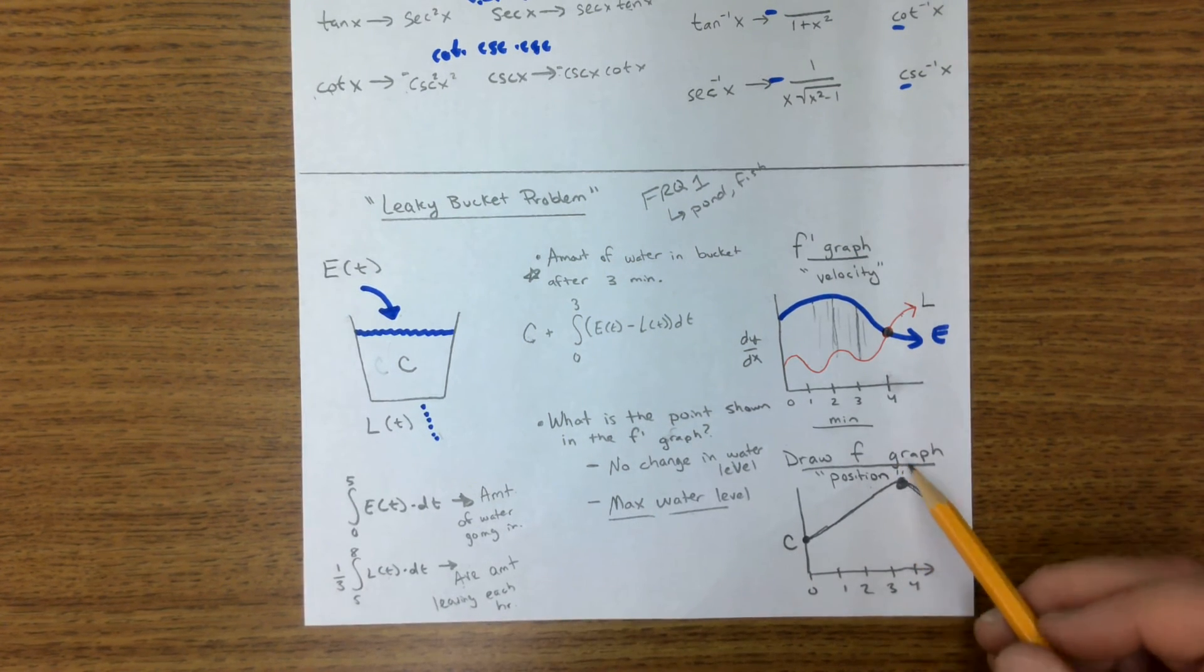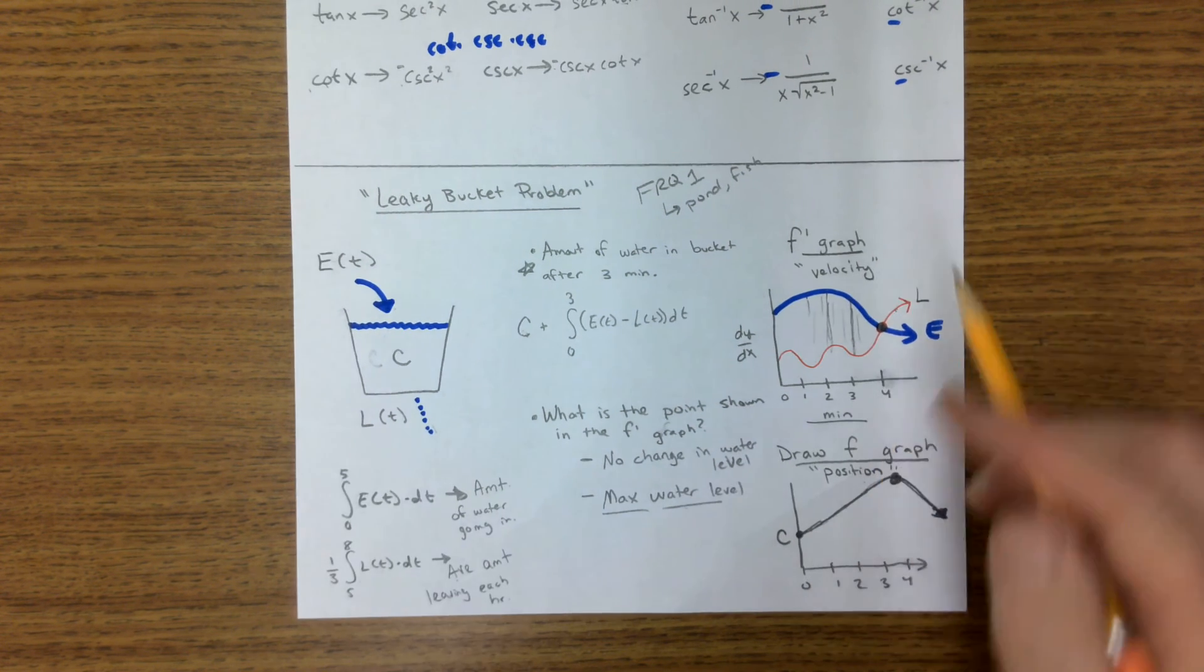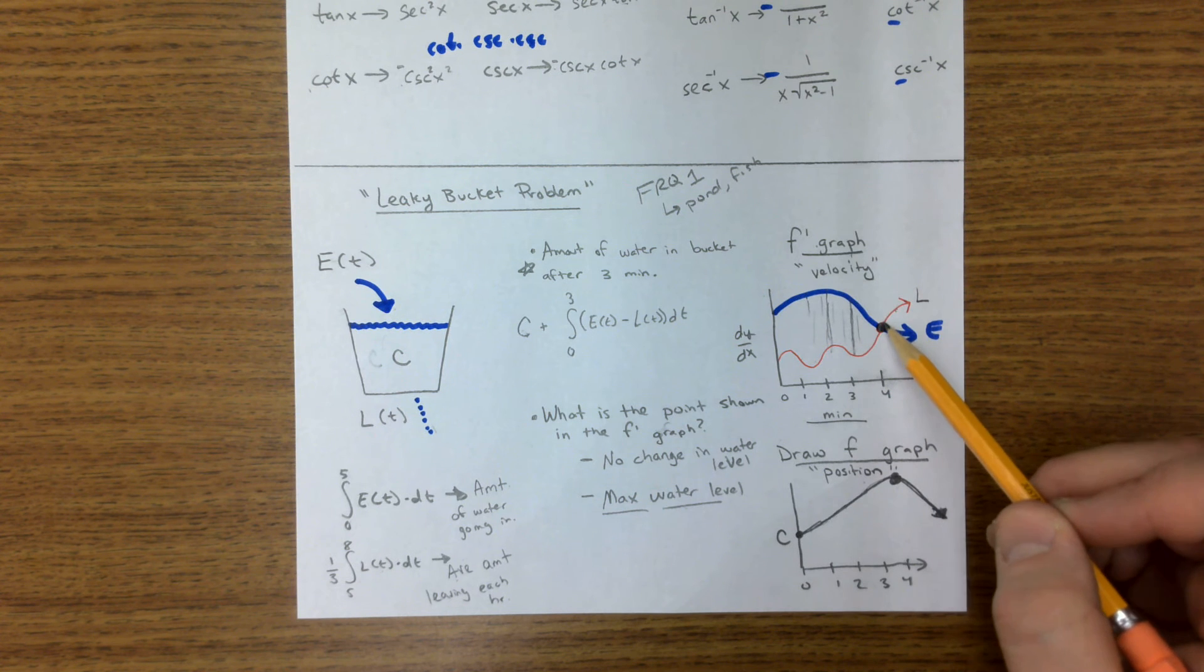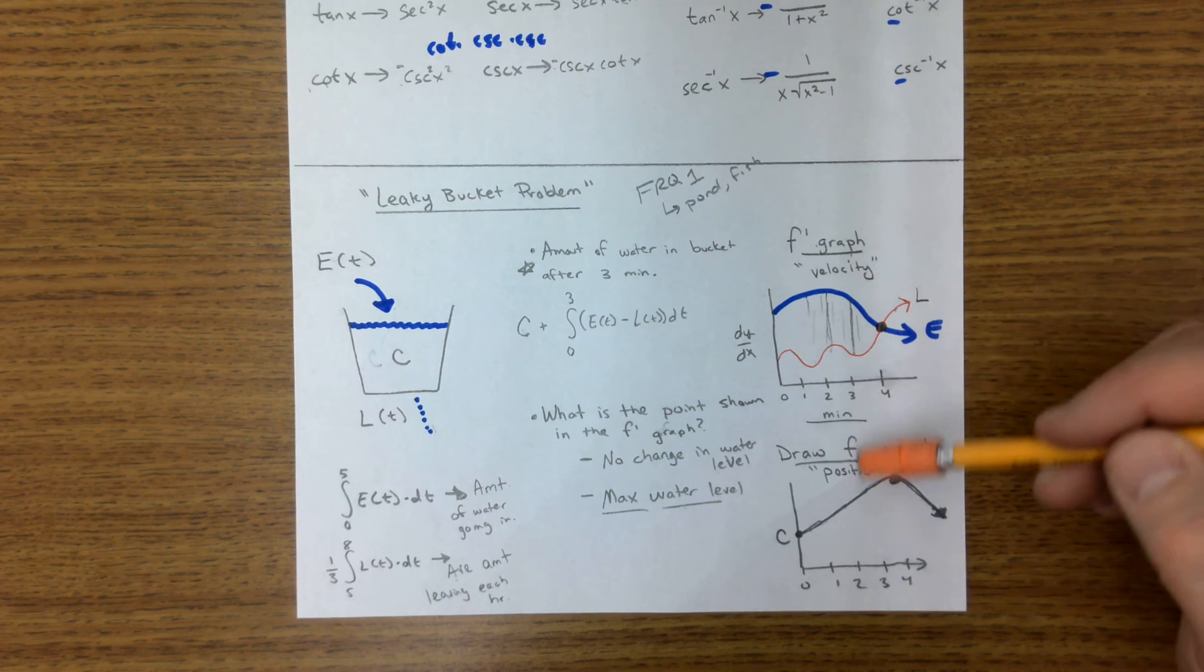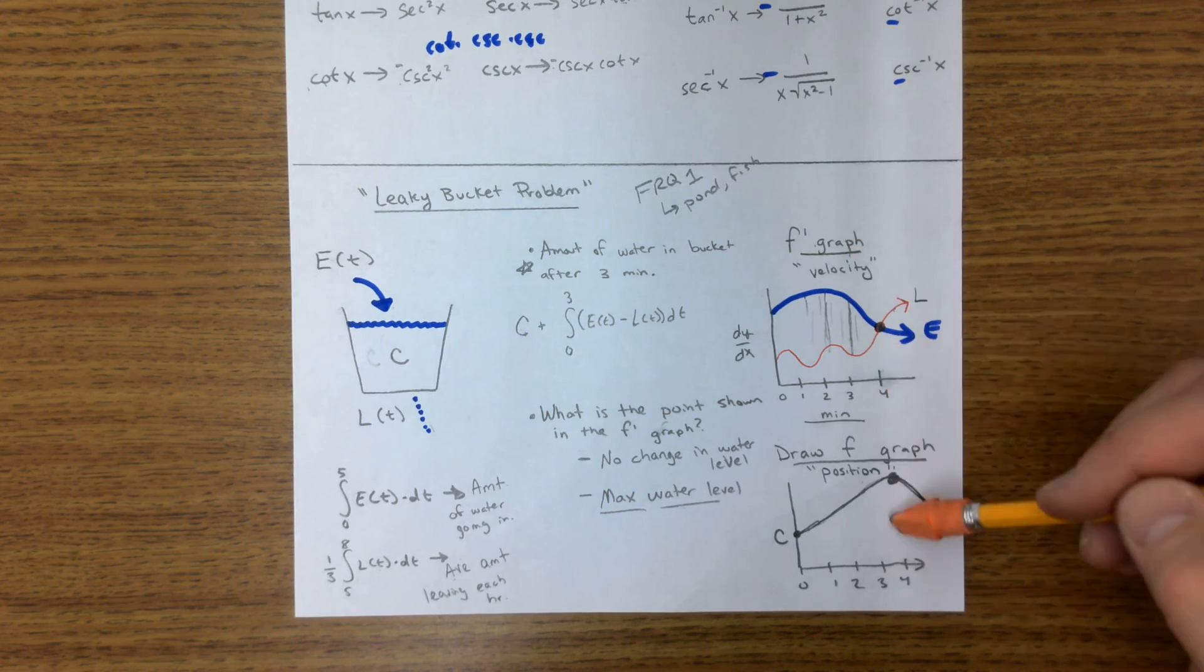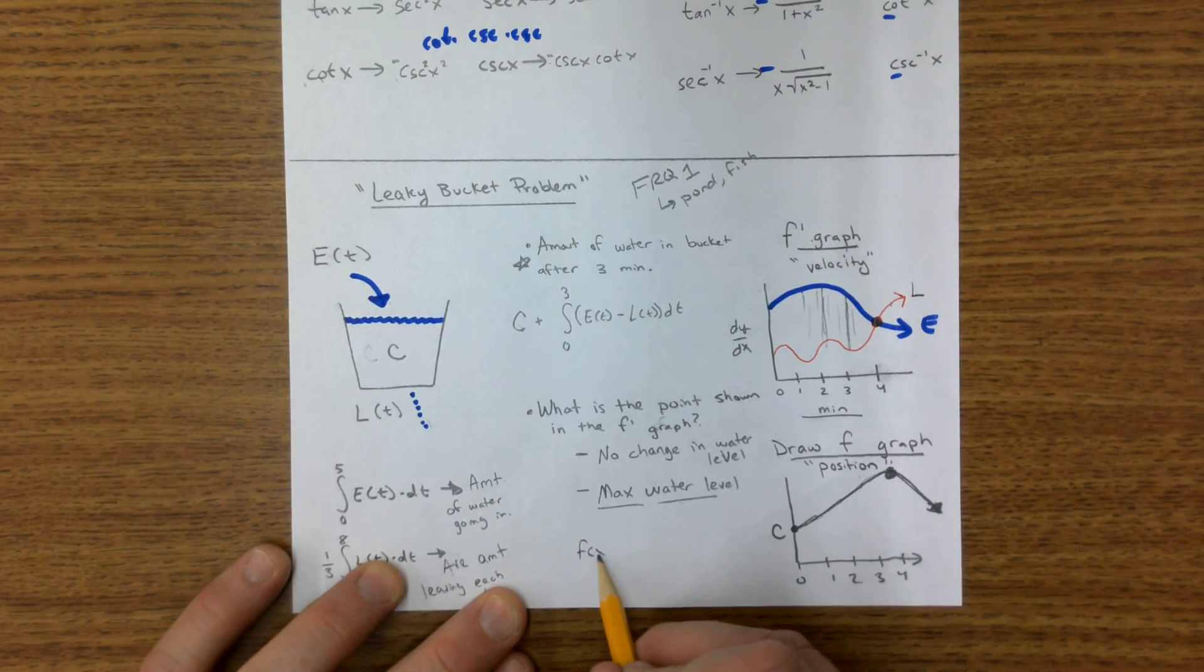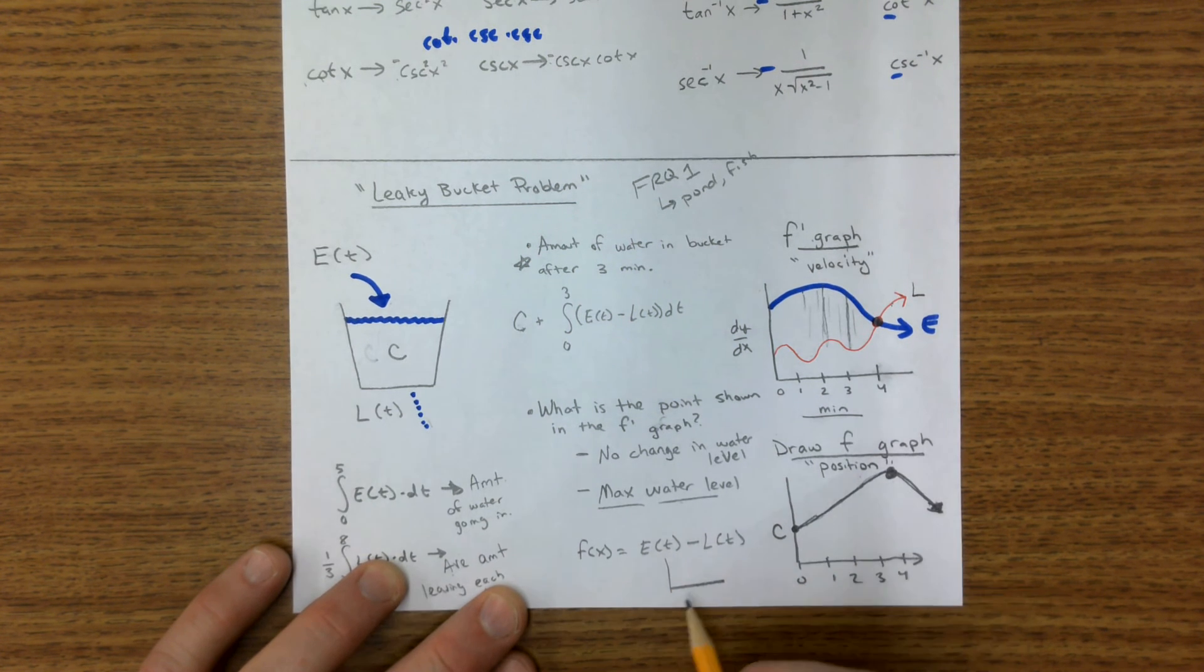But when you're talking about a graph of derivatives, it looks like this. So this translates to here. Sometimes it's difficult to go back and forth between the graphs. I suggest you draw them out and really talk about what this means and what that point is. I'll give you one more graph. I had someone graph this equation: F of x is equal to the e function minus the l function. And it looked like this.